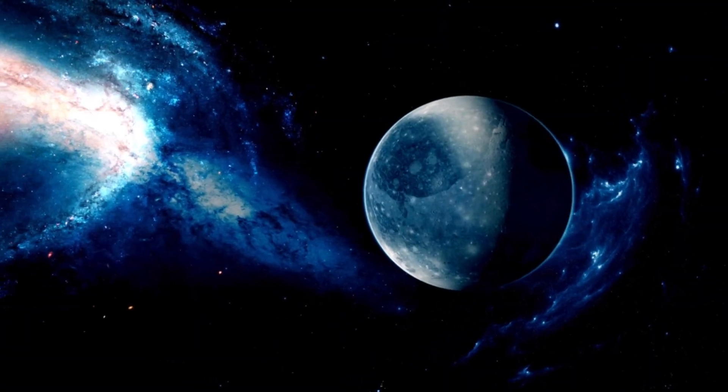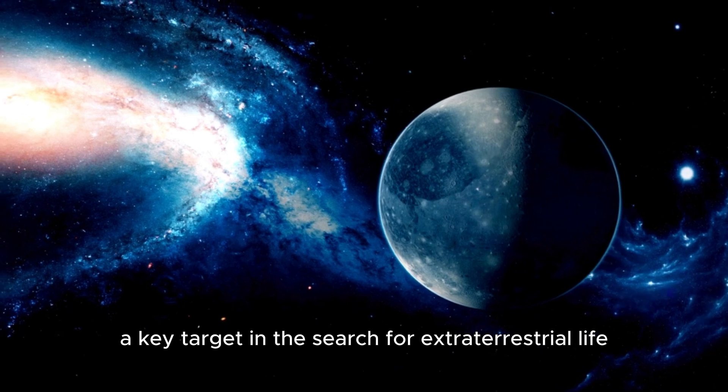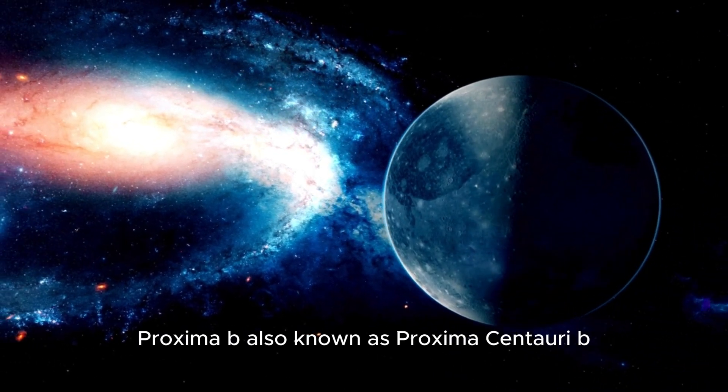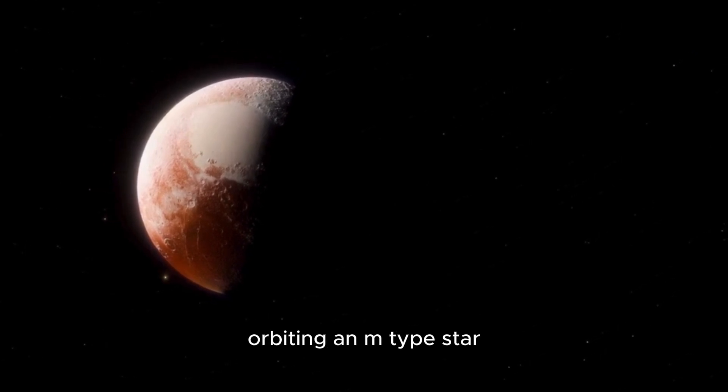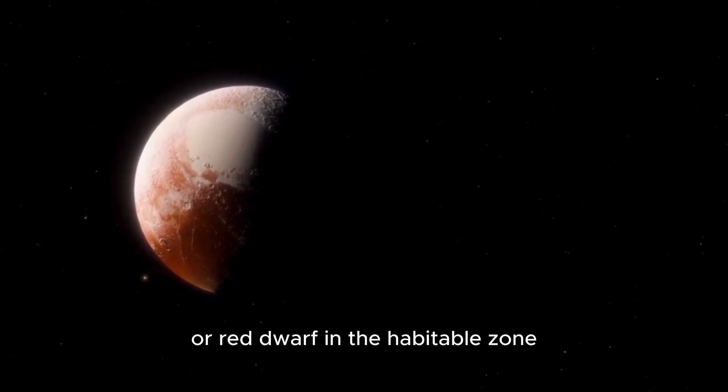Proxima b, also known as Proxima Centauri b, is an Earth-sized exoplanet orbiting an M-type star, or red dwarf, in the habitable zone.